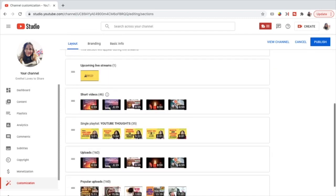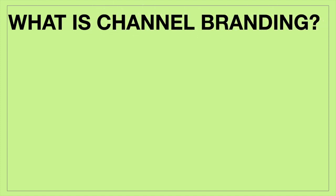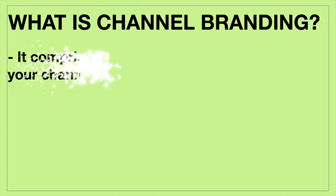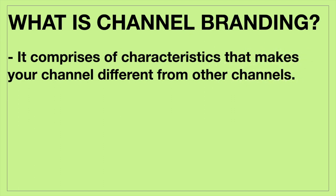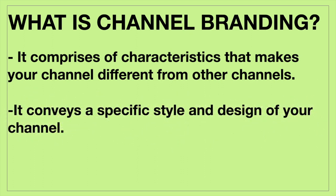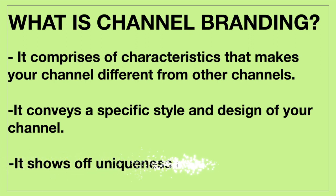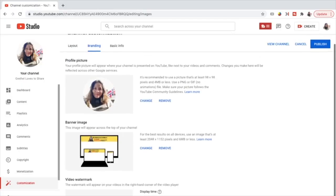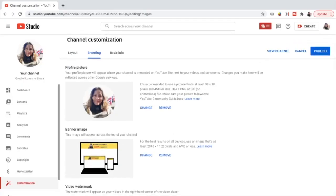Now we go to the branding part. What is channel branding? It comprises the characteristics that make your channel different from other channels. It conveys a specific style and design of your channel and shows off the uniqueness of your channel. On the branding part there are three parts: the profile picture, banner image, and video watermark.